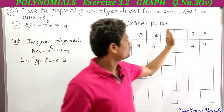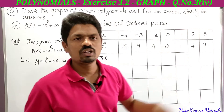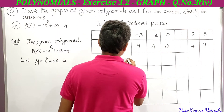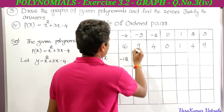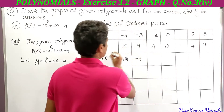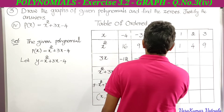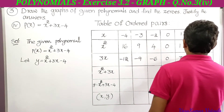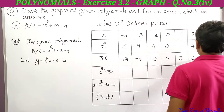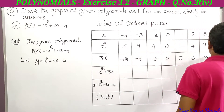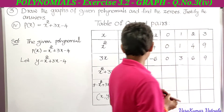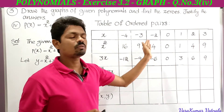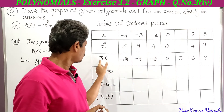Next, for 3x, multiply the x values by 3: 3 × (−4) = −12, 3 × (−3) = −9, 3 × (−2) = −6, 3 × 0 = 0, 3 × 1 = 3, 3 × 2 = 6, 3 × 3 = 9. Concentrate on the x values only while multiplying by 3 — do not multiply the x² values. It is 3 × x, so multiply only the x values.